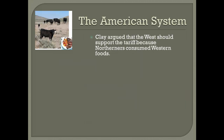Not everybody was excited about the idea of the American System, so Clay discussed and argued with people over it. As he was making his arguments in support of his system and the tariff especially, he explained to the people in the West that they should support these tariffs because the Northerners consumed the food that the Westerners sent them.